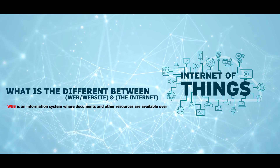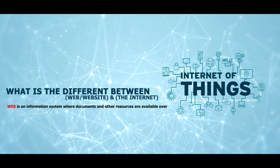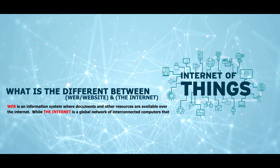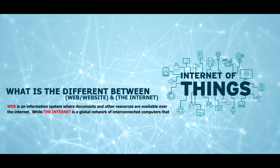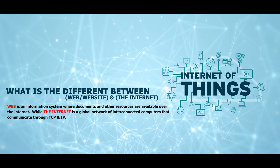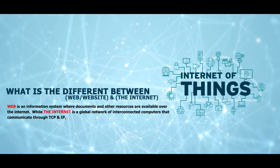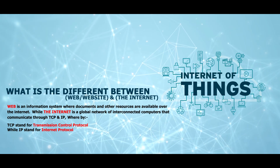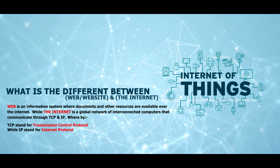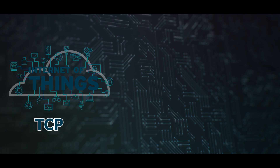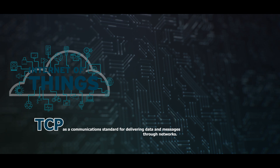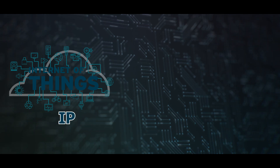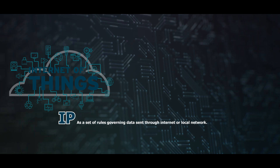What's the difference between the web and the internet? The web is an information system where documents and other resources are available over the internet, while the internet is a global network of interconnected computers that communicate through TCP and IP. TCP stands for Transmission Control Protocol, while IP stands for Internet Protocol. You can think of TCP as a communication standard for delivering data and messages through networks, while IP is a set of rules governing data sent through the internet or a local network.